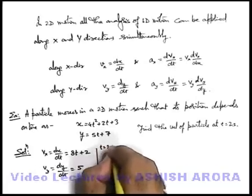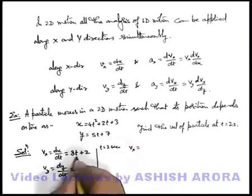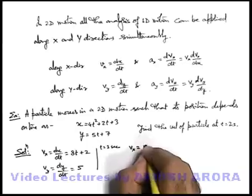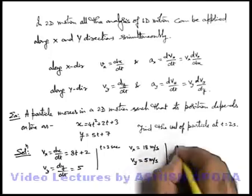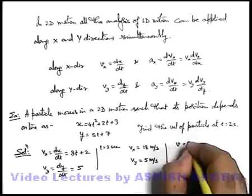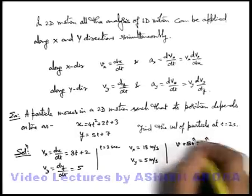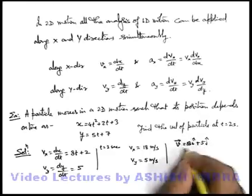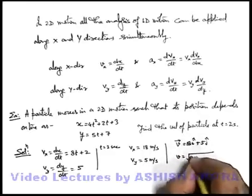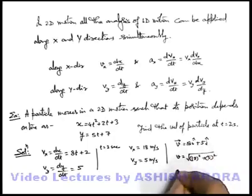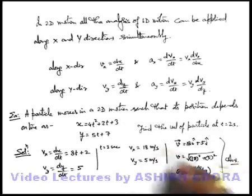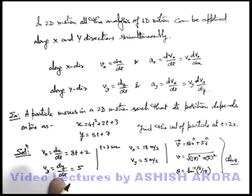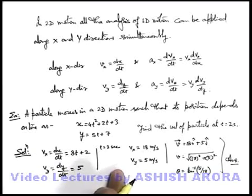At t = 2 seconds, the velocity in the x-direction is 8×2 + 2 = 18 meters per second, and the velocity in the y-direction is 5 meters per second. So the net velocity vector can be written as 18 i-cap plus 5 j-cap. If we wish, we can calculate the magnitude as the square root of 18² + 5², and the angle made by the velocity vector with the x-axis — or slope angle — can be written as tan inverse of 5 by 18. We have just applied the concept of rectilinear motion simultaneously in x and y directions to get the final result.